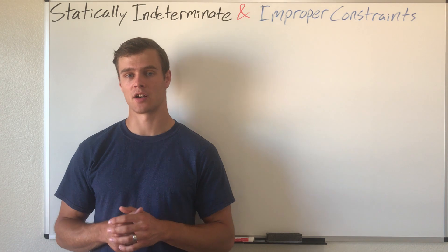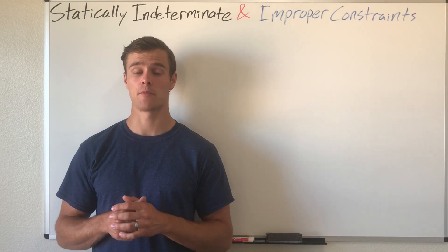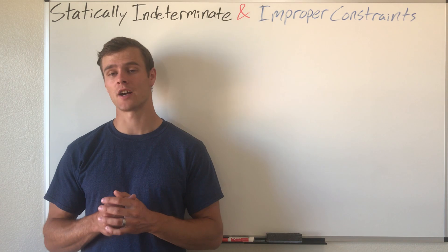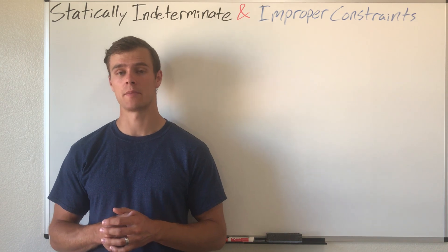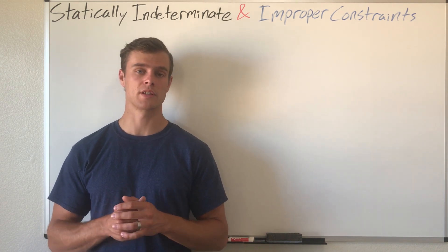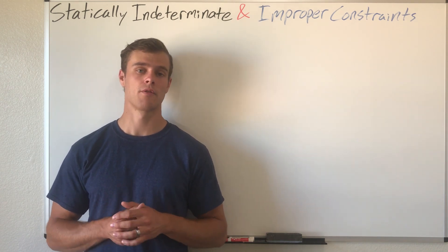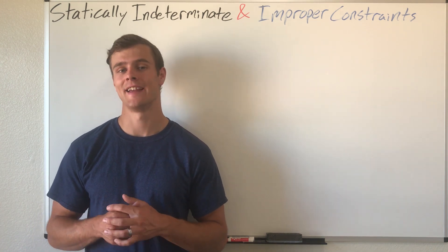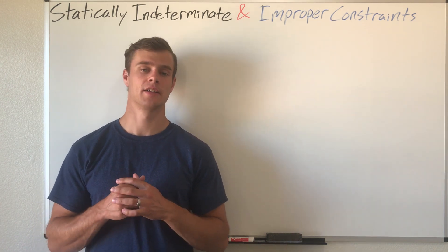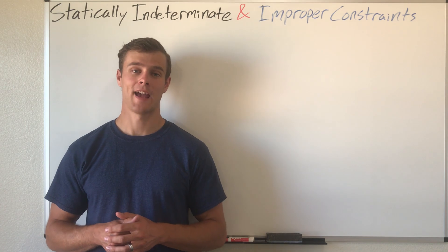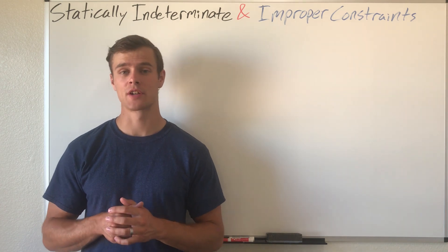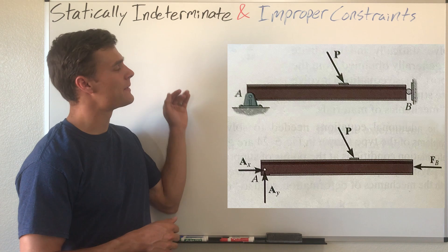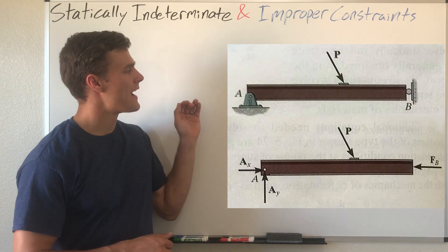To be statically indeterminate means to have more unknown forces than equilibrium equations to solve them. Those unknown forces might be support reactions or other forces you're trying to solve for. If you have more of those than equilibrium equations, it is called statically indeterminate. Improper constraints is a related but separate concept.